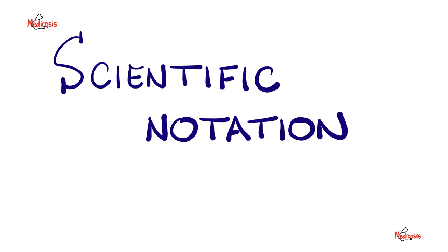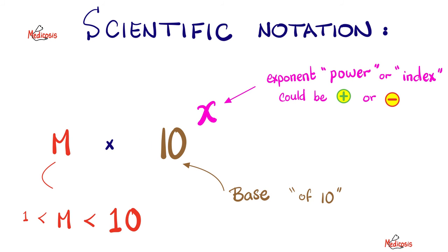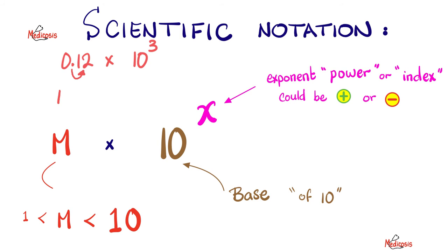We're done with rounding of significant figures. Now let's talk about scientific notation — how to write a number in scientific notation. It is written as m times 10 to the power x. The exponent or power or index can be positive or negative. The base is always 10. As for m, it's a number greater than 1 and less than 10. If your final answer were 0.12 × 10³, remember m cannot be less than 1 — you kick the decimal point one step to the right, making it 1.2, and since you increased m, you decrease the exponent by 1. So it becomes 1.2 × 10². That's proper scientific notation; 0.12 × 10³ is improper.